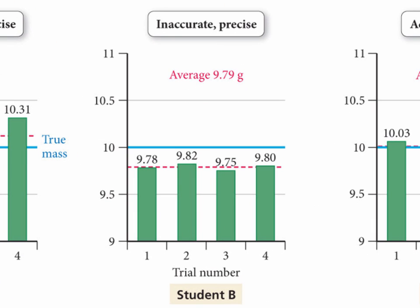For example, student B has made precise measurements because all four measurements are close to one another. However, since the average of the four measurements is far from the actual value of the mass, the measurements were not accurate.